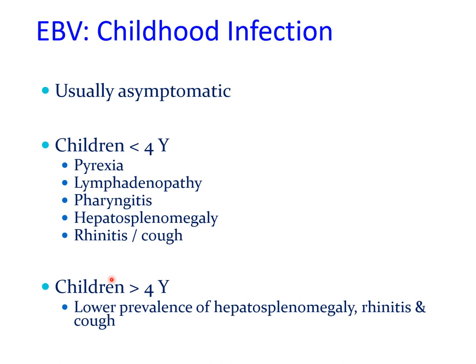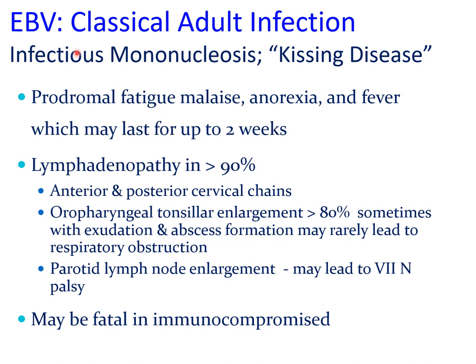The most recognized form of Epstein-Barr virus infection in adults is infectious mononucleosis, marked by prodromal fatigue, malaise, and anorexia, followed by fever which may last for up to two weeks. There is lymphadenopathy in up to 90% of patients, particularly involving the cervical lymph nodes. Oropharyngeal tonsillar enlargement can be seen in 80% of patients and may cause respiratory obstruction. Parotid lymph node involvement may lead to facial nerve paralysis, and Epstein-Barr virus infection in immunocompromised patients could be potentially fatal.